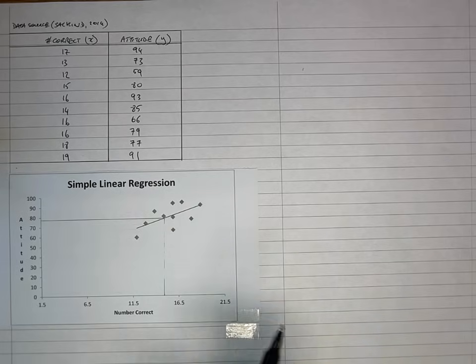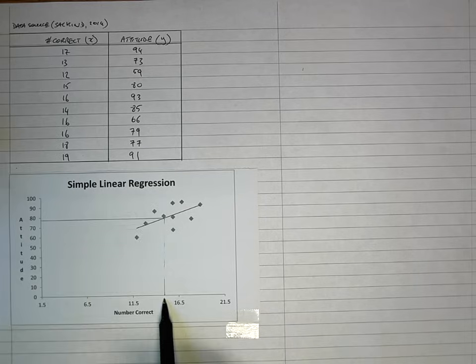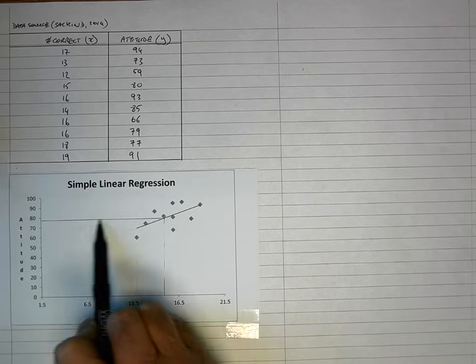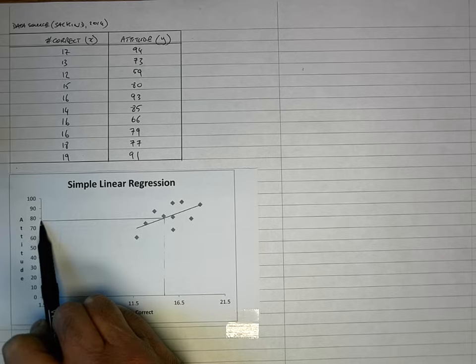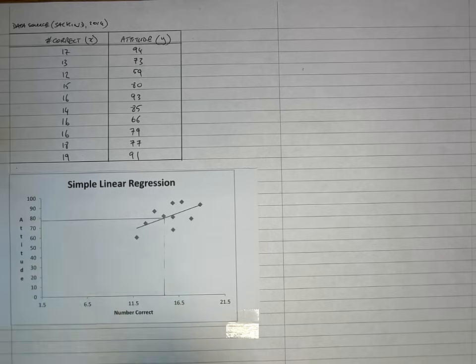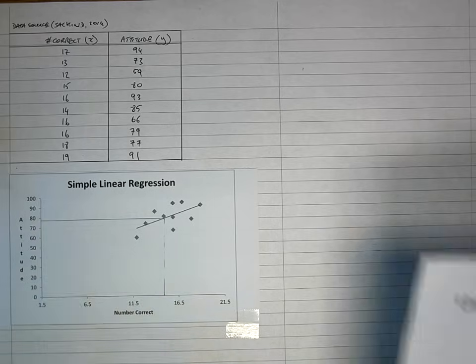So what I'd like to be able to do — say a value here of around 15 — what would the corresponding value for y, my attitude, be? So in order to be able to predict like this, I need to use my regression formulae.